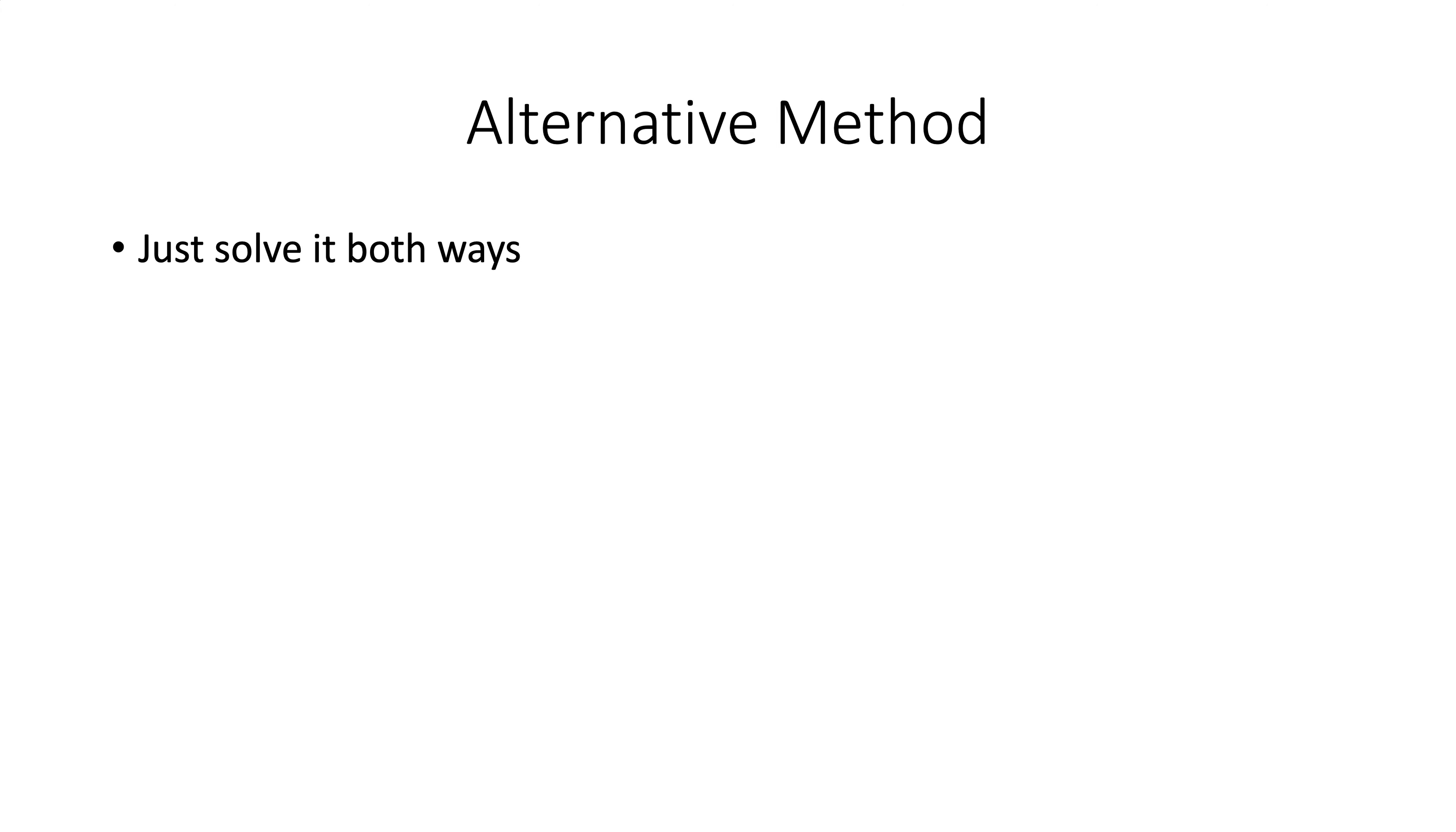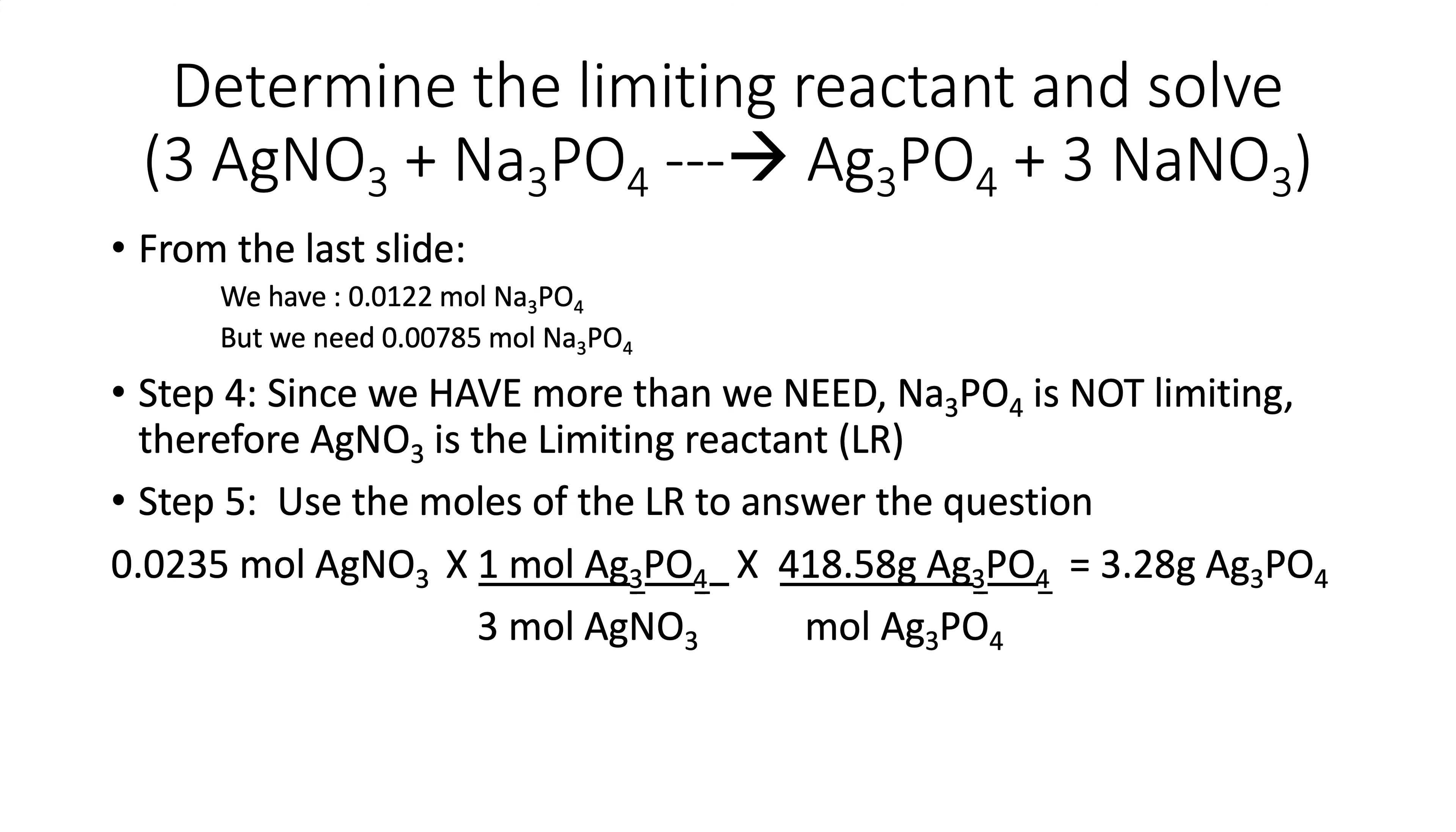Now, there is another way, if you find that too complicated. Another way to do it is you could literally just solve it both ways. So what I mean by that is you could just take the grams of the silver nitrate and the grams of the sodium phosphate, take both of them all the way out to silver phosphate.